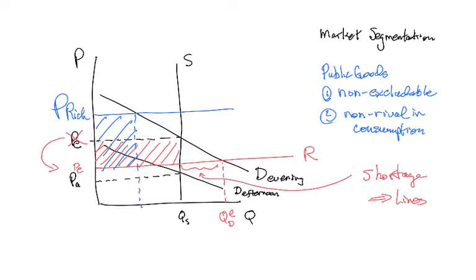If the theater owner puts this show on for one person, what is the marginal cost of the second person seeing the show? It's zero.